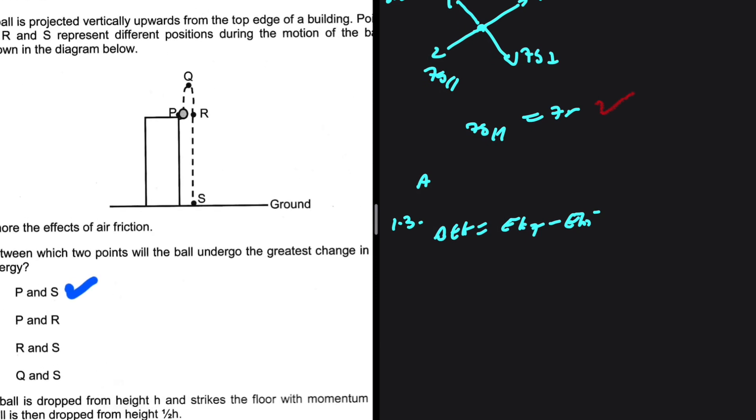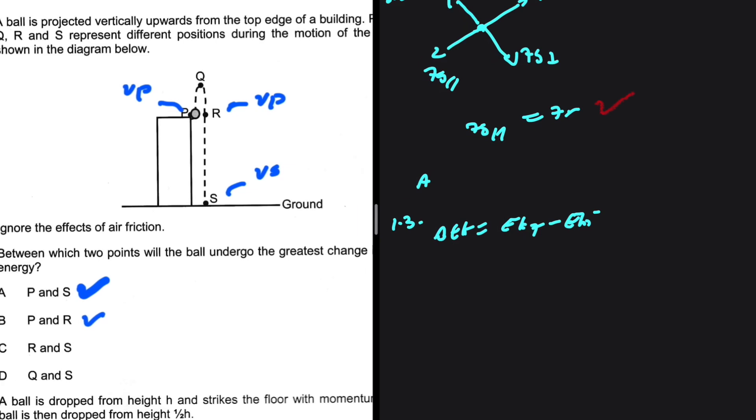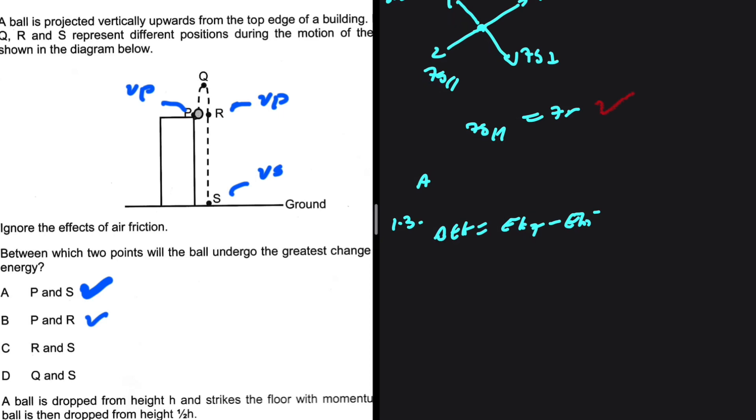Let's take a look at P and R. At P we have vp, at R we also have vp. It's just with a negative sign or a positive sign depending on which direction you take as positive, but the magnitude of the velocity at P is equal to the magnitude of the velocity at R. So P and R, the change in kinetic energy there is actually zero between P and R, so this cannot be the correct option. Between P and R the change in kinetic energy is zero.